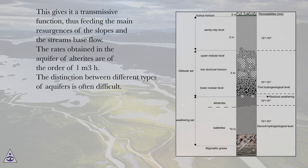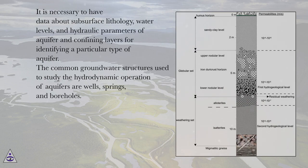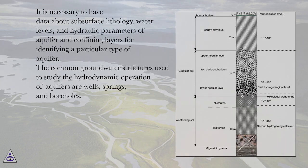The rates obtained in the aquifer of alterites are of the order of one cubic meter per hour. The distinction between different types of aquifers is often difficult. It is necessary to have data about subsurface lithology, water levels, and hydraulic parameters of aquifer and confining layers for identifying a particular type of aquifer. The common groundwater structures used to study the hydrodynamic operation of aquifers are wells, springs, and boreholes.